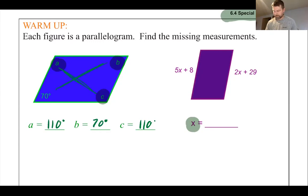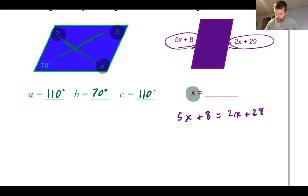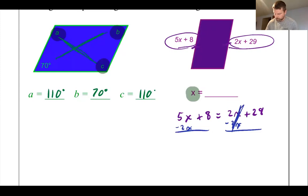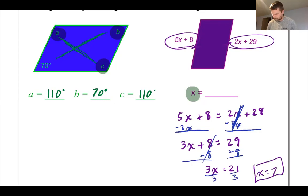For X, in this parallelogram we have two opposite sides. In parallelograms, opposite sides are congruent, so those two things should be equal to each other. To find X, we set them equal: 5X plus 8 equals 2X plus 29. Subtract 2X from both sides to get 3X plus 8 equals 29. Subtract 8 from both sides to get 3X equals 21. Divide by 3, and X equals 7.